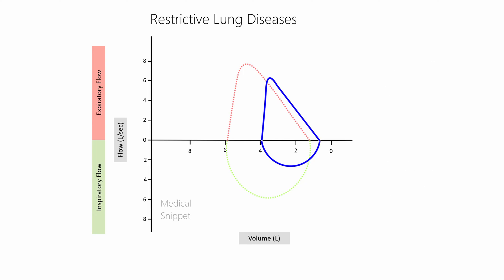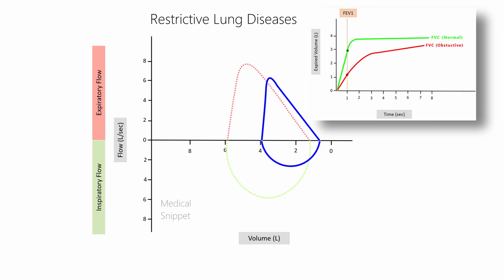Patients with restrictive lung disease have reduced forced vital capacity, reduced residual volume, and reduced total lung capacity. The loop shifts to the right of normal. On the expired volume-to-time graph, FEV1 decreases proportionally to the reduction in FVC, so the FEV1 to FVC ratio remains normal or greater than 0.7 when FVC is more reduced than FEV1.